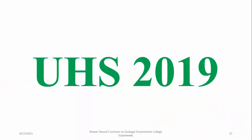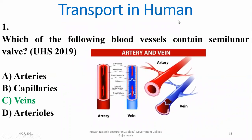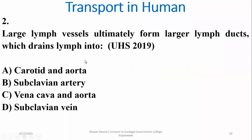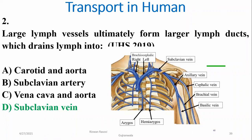Some of these questions are taken from UCS 2019 and NMD Care 2020 papers. Which of the following blood vessels contains semilunar valves? The right option is veins. Just like the lymphatic system, veins possess semilunar valves to prevent backward flow of blood, but there are no semilunar valves in arteries. The largest lymph vessels ultimately form larger lymph ducts which drain lymph into the subclavian vein — this is the most repeated question in past papers related to the lymphatic system.